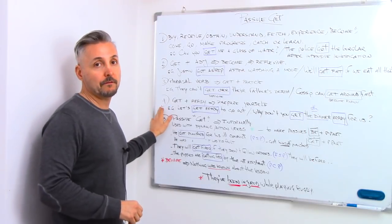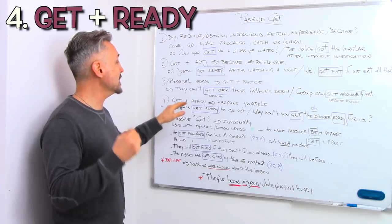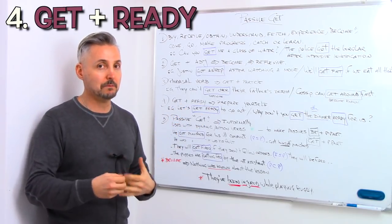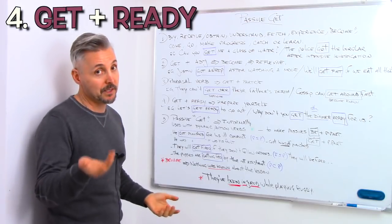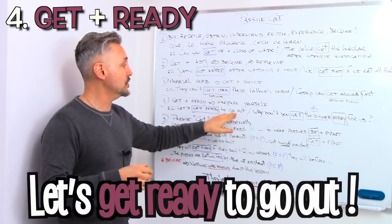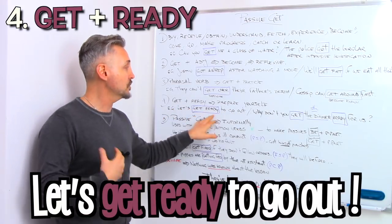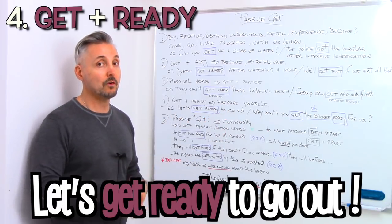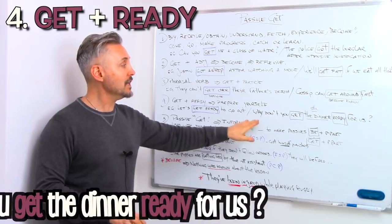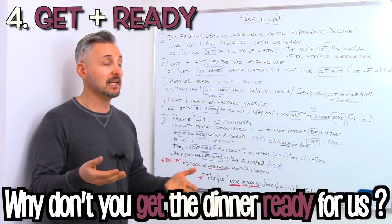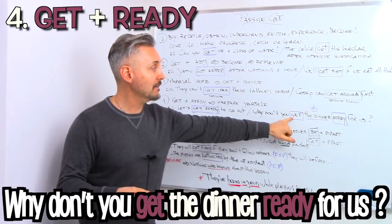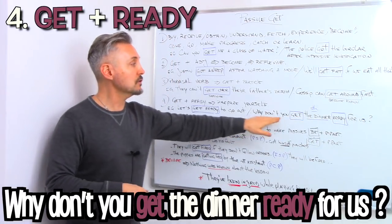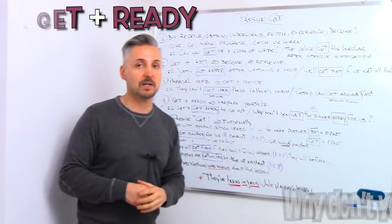Now the fourth point is GET plus READY. So prepare yourself. This is what it means. Prepare yourself. Like for example, let's get ready to go out. Let's prepare to go out. Or another example, why don't you get the dinner ready for us? In this case, we have GET plus something plus READY.